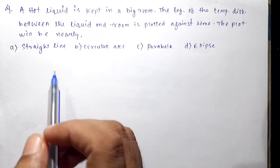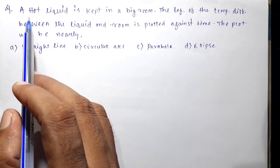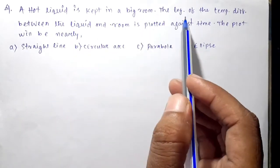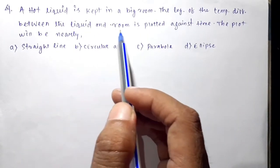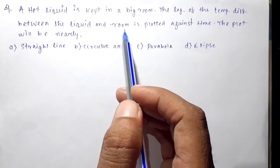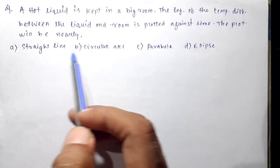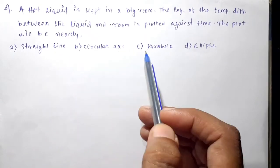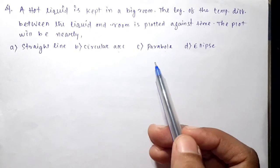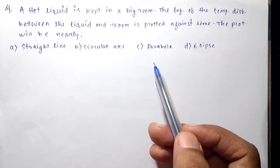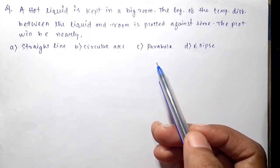So I'm going through a very good conceptual question. The question is: A hot liquid is kept in a big room. The logarithm of the temperature difference between the liquid and the room is plotted against time. The plot will be nearly a straight line, a circular arc, a parabola, or an ellipse.